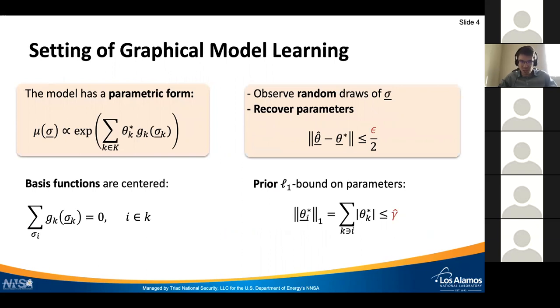The typical setting of graphical model learning is as follows. Usually we're talking about parametric estimation where we assume we know an exponential family of the distribution, in particular we know a set of basis functions denoted as g_k which act on subsets of spins in our system. What we don't know are the parameters associated with this model, denoted by theta star, and that's what we want to estimate.